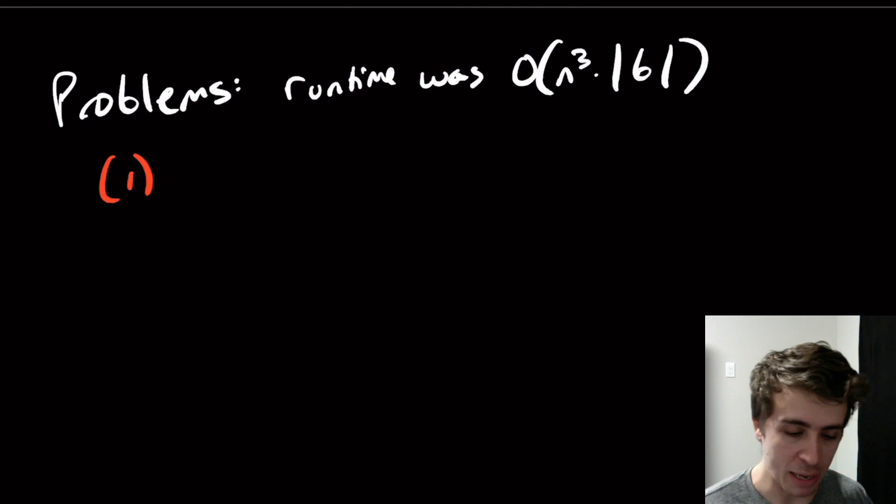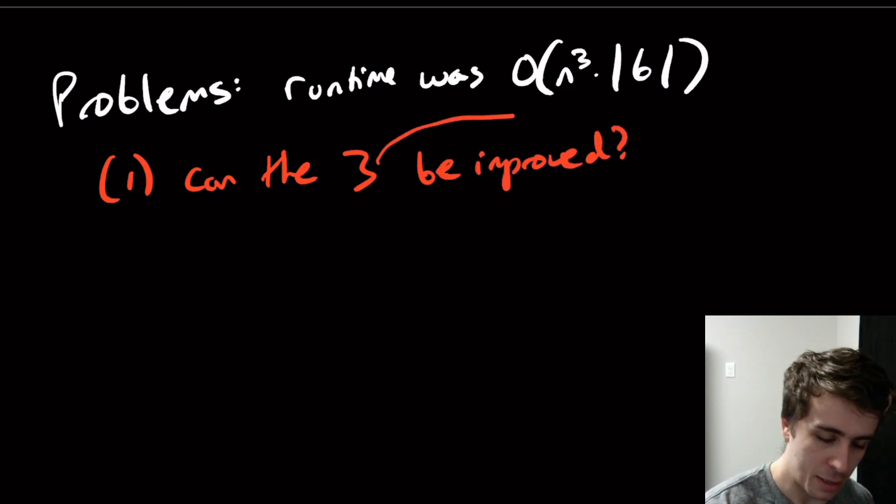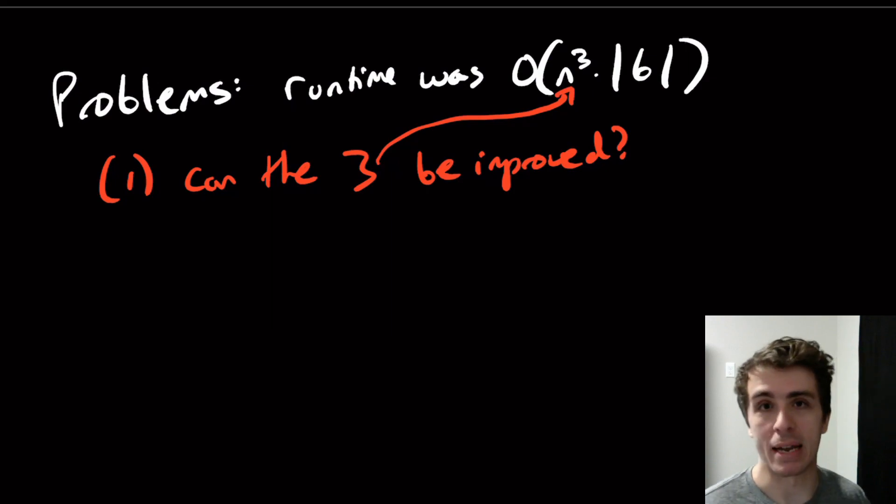Can the 3 be improved? So can the 3 in the exponent right here be improved? We usually consider the grammar size to be constant, so it's usually just left out of the big O notation. So the big runtime here is based on the 3 here.